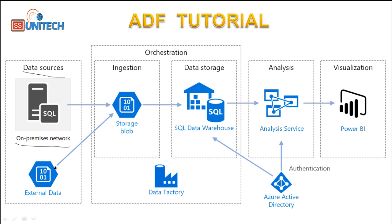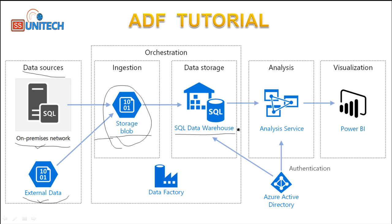Here you can understand how data flows work in the industry. First you have the data sources — those could be in an on-prem network or external data such as binary data or Cosmos data, which is NoSQL data. Inside the Data Factory, we consume that data from on-prem networks or external/cloud sources and store it inside Azure Blob Storage. We have discussed Blob Storage in the Azure tutorial playlist. After that, we load that data into the SQL Data Warehouse.